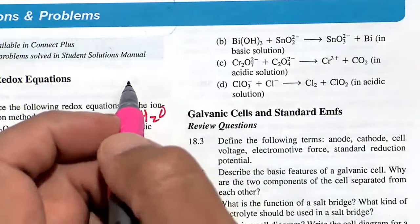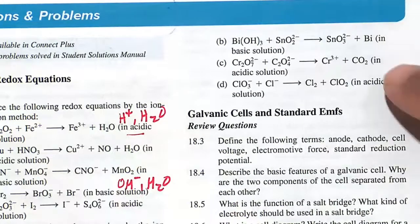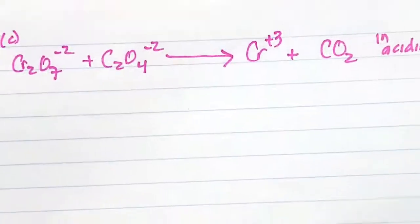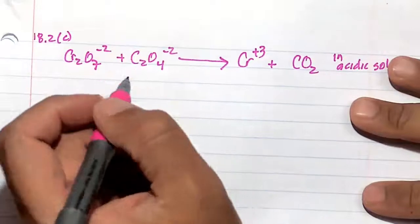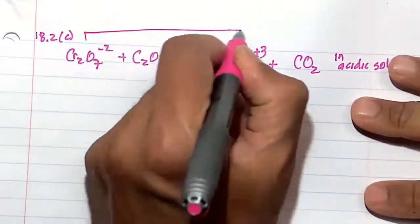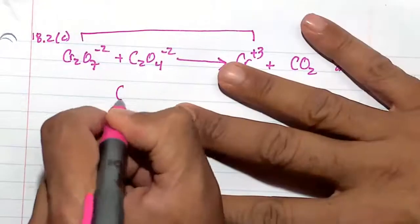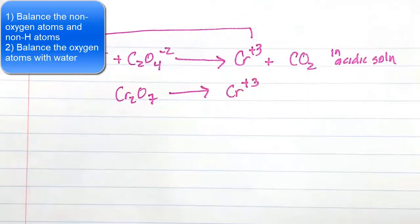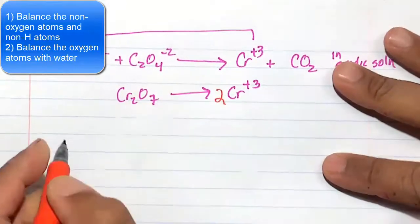The key here is to deconvolute or split this up into its corresponding oxidation half reaction and reduction half reaction. So what I see here immediately is the CR2O7 going to CR plus 3. So let's go ahead and write this half reaction. What I see immediately to my eye is we need to balance out the CRs, chromiums.